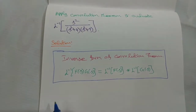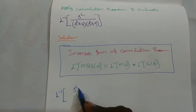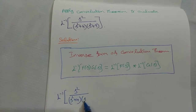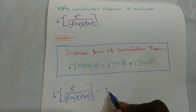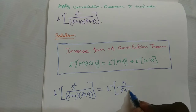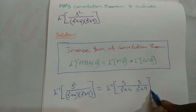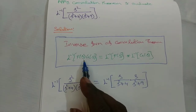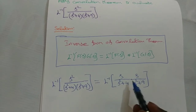Now take the given function: L inverse of s squared by (s squared plus 4) into (s squared plus 9). This can be written as L inverse of [s/(s²+4)] into [s/(s²+9)] — a product of two functions. So here we have L inverse of F(s) into G(s).